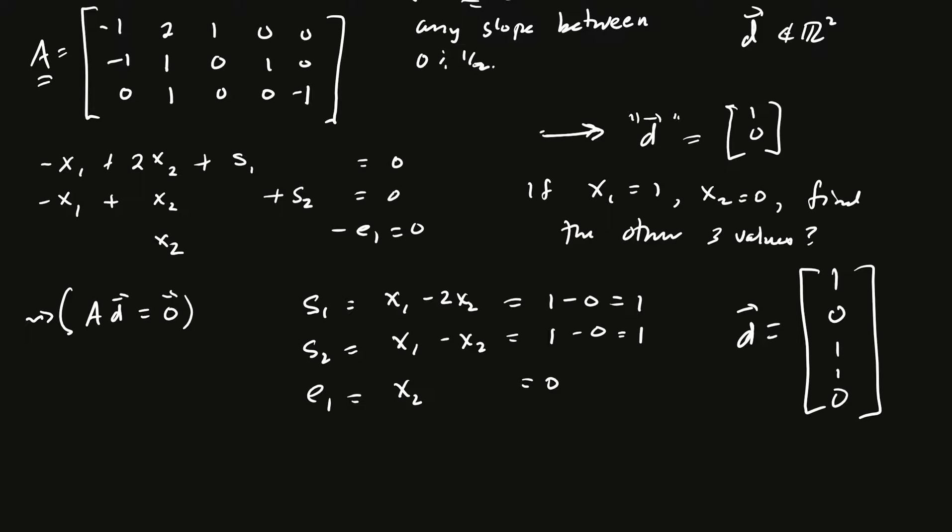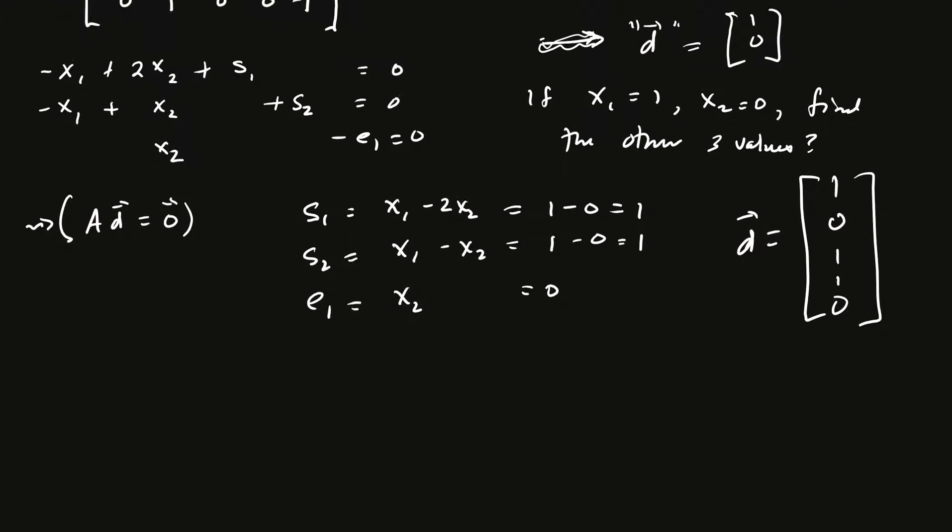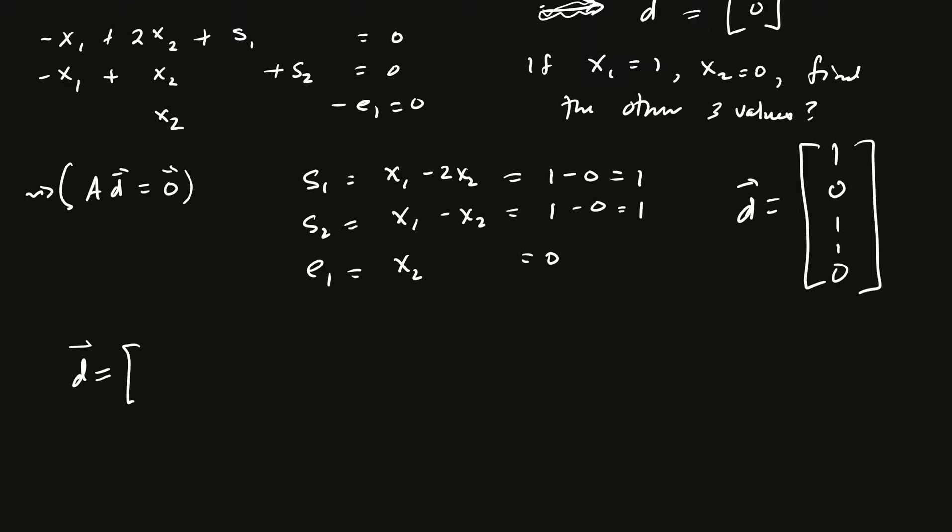Now, what does a vector D look like with slope of exactly 1 half? Well, in that case, D would be something like 2, 1. That would have a slope of 1. So, I'm going to put this in quotes because our full D is in R5. Then using our equations here, we can find the other variables. So, that means that S1 would have to be 2 minus 2 times 1, which is 0. S2 would be 2 minus 1, which is 1. E1 would be x2, which is 1. And there we go. And so, now my vector D is going to be 2, 1, 0, 1, 1.